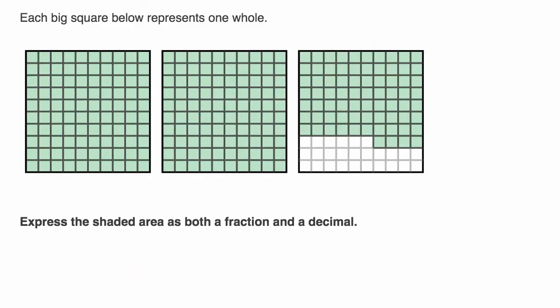Let's do another example. So here, this is a little bit more involved. They say, once again, each big square below represents one whole.